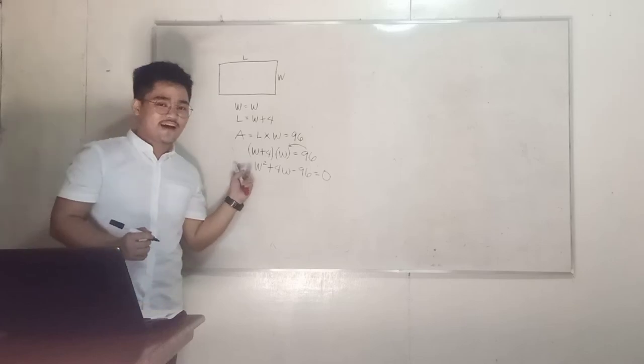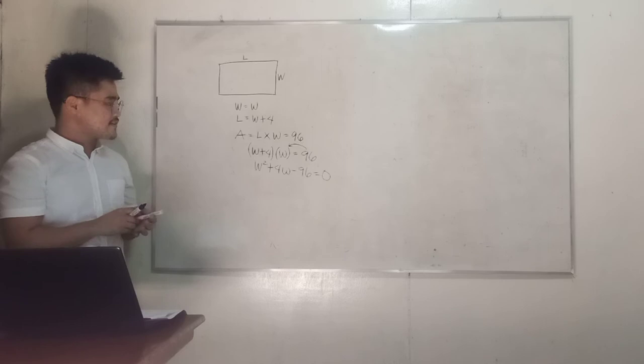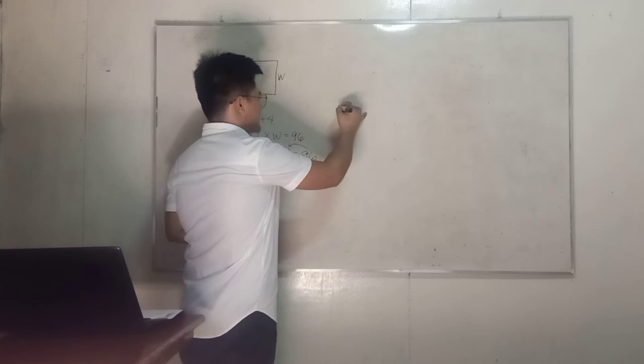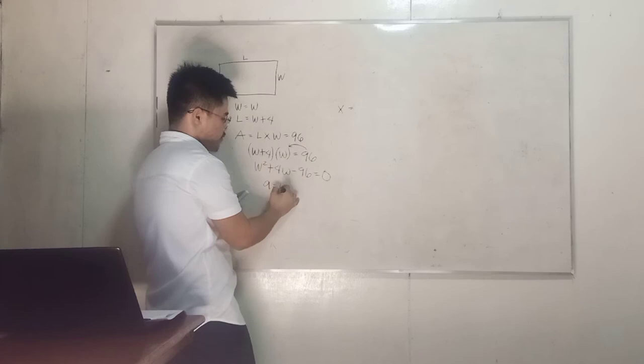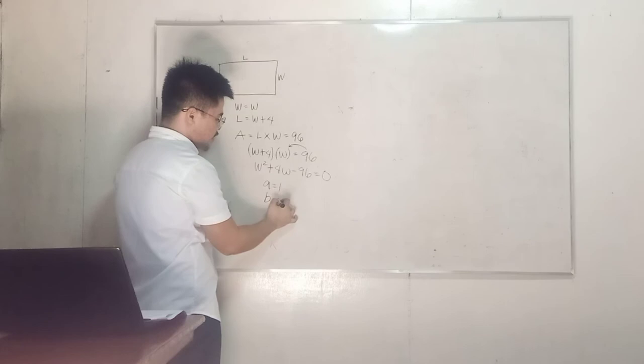So we have a quadratic equation now. What do you prefer to use in solving this equation? Okay, let's use quadratic formula. So we have, what is our a? 1. And the b is equal to 4, and our c is equal to negative 96.